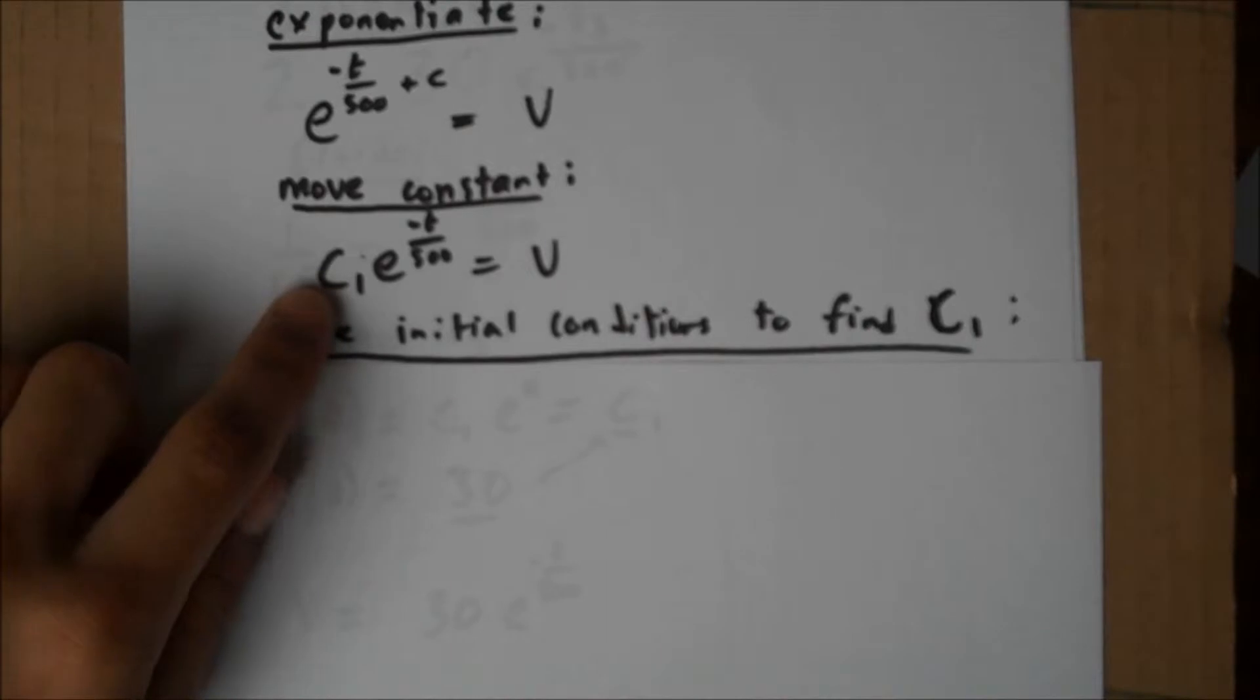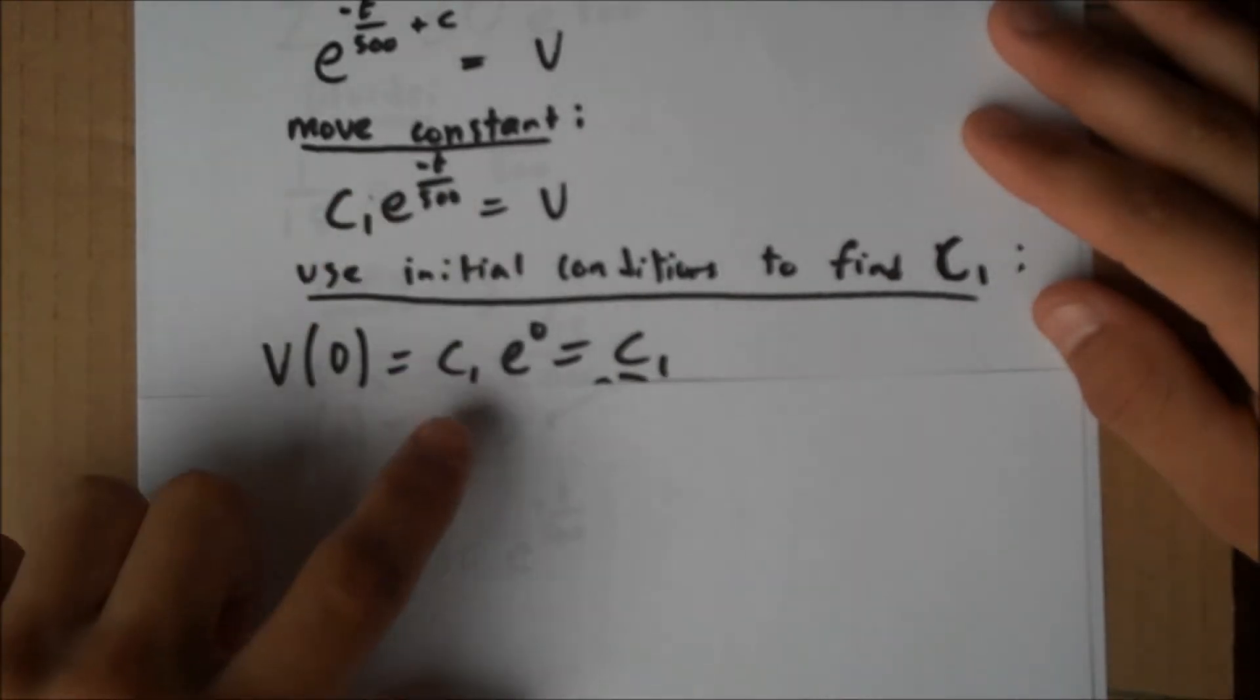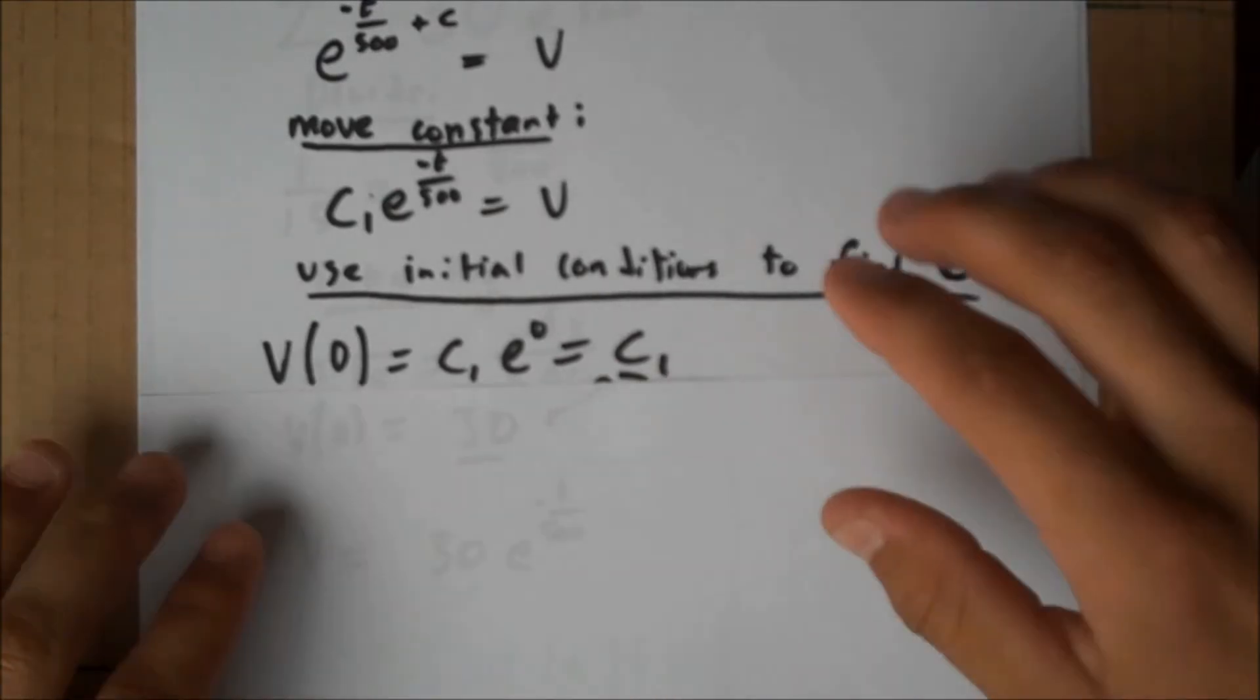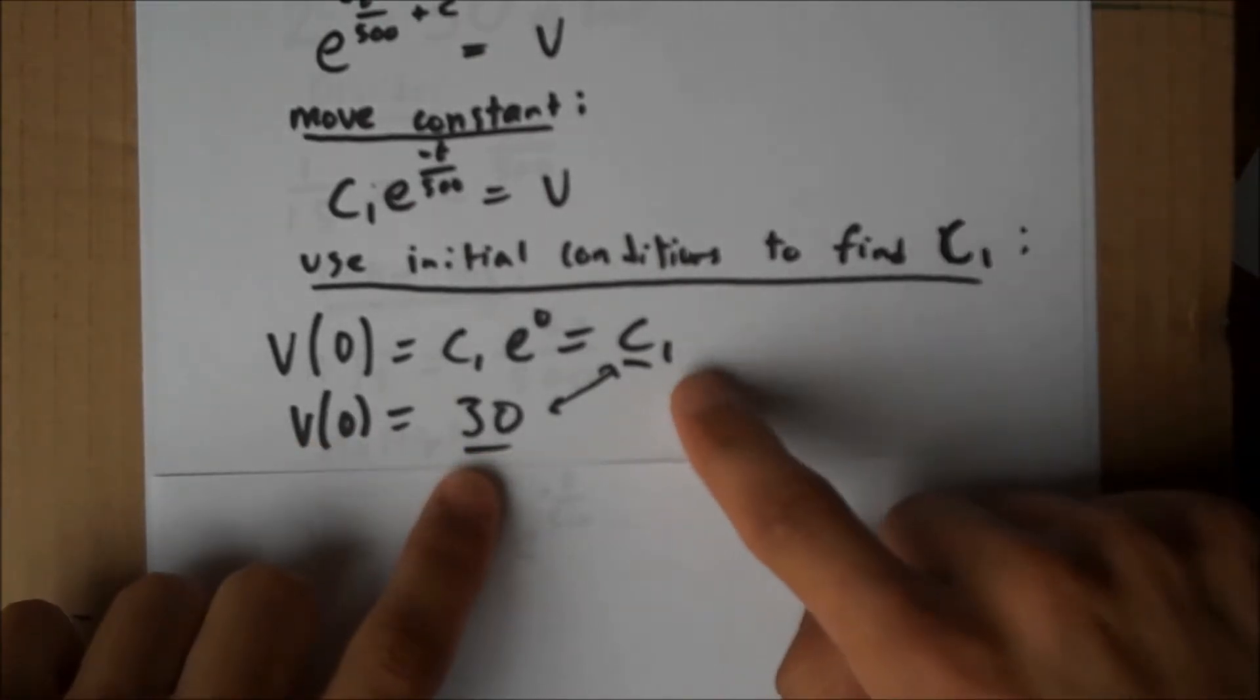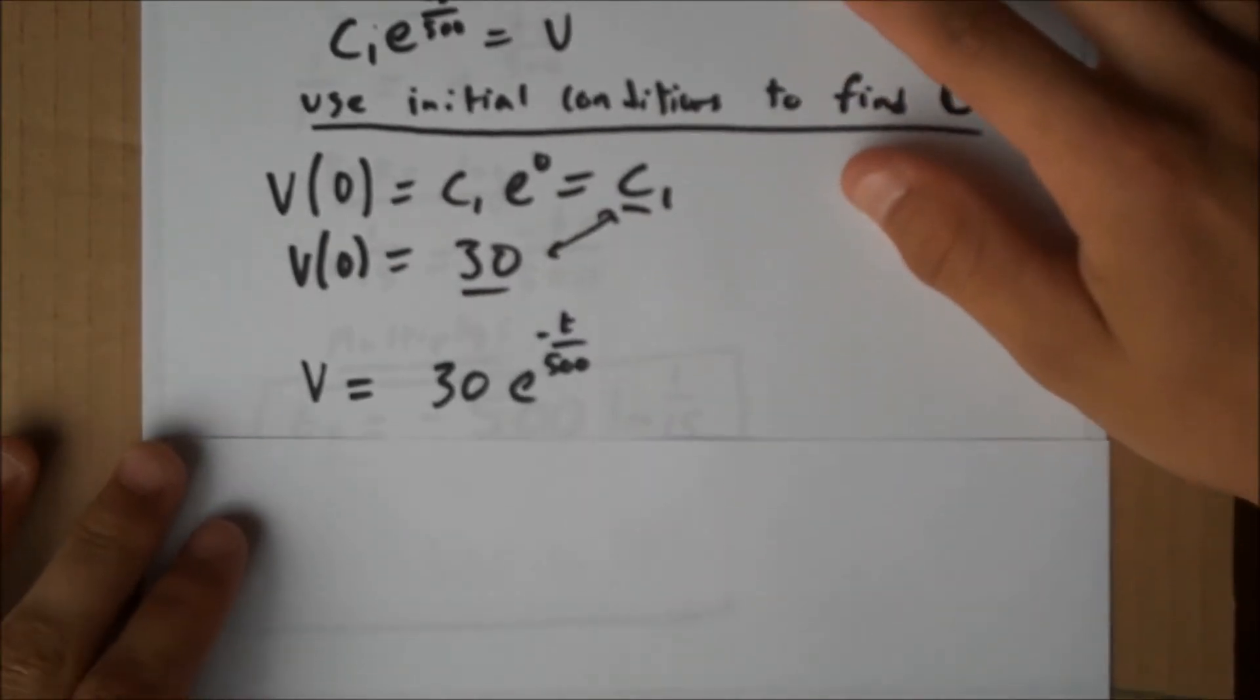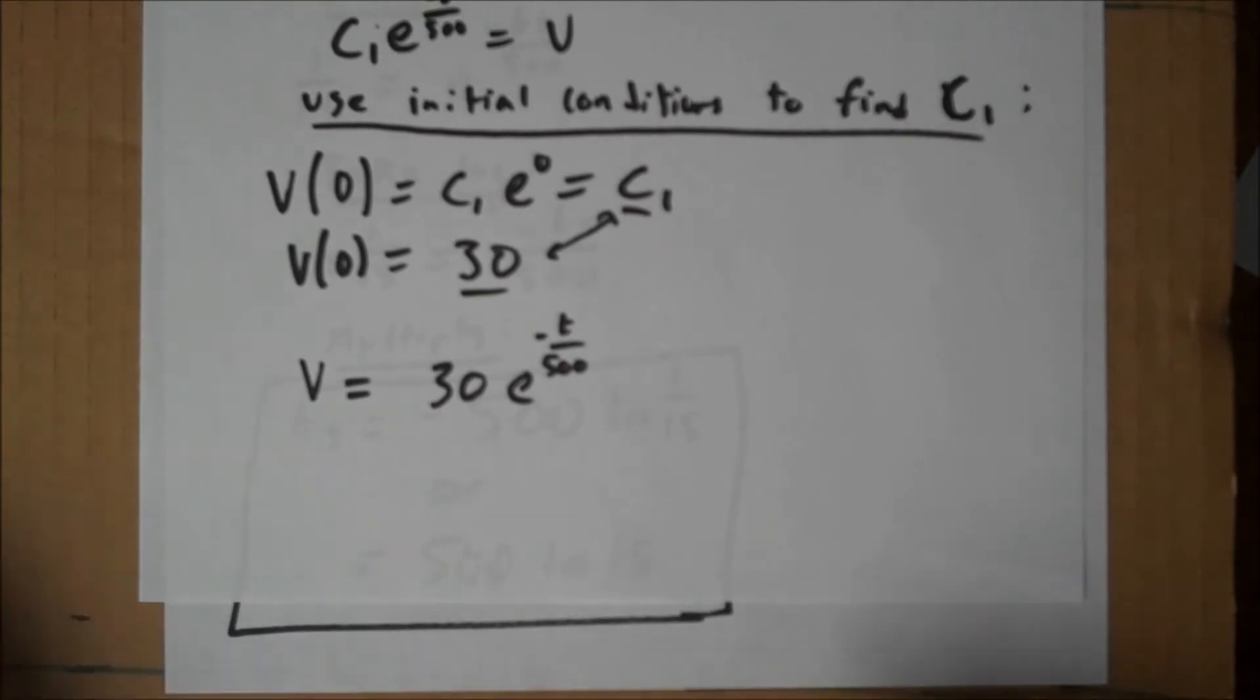Then, we're left with this unknown multiplicative constant. We'll use our initial conditions to find c1. We know that v of 0, plugging in t equals 0, is equal to c1 times e to the 0, which is just 1, so we get v of 0 equals c1. But we also know from the problem that the initial velocity, v of 0, is equal to 30. So we can equate these two underlined expressions, which are both expressions for the initial velocity. We've now found the value of c1. And we have v equals what we know to be c1, which is 30, e to the negative t over 500. We now know the time dependence of the velocity.